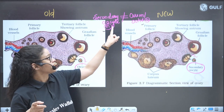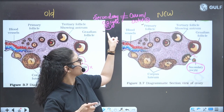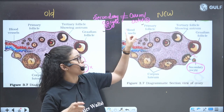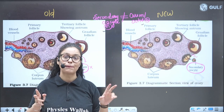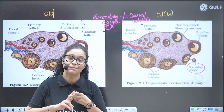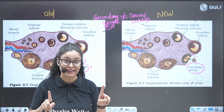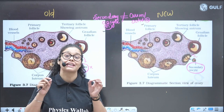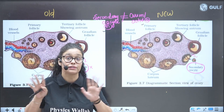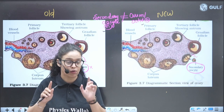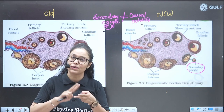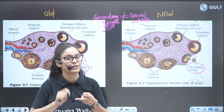Secondary oocyte is haploid, and ovum is also haploid, but they are not similar at all — they are not equivalent. As per NCRT they are equivalent, but no, they are not equivalent at all. We saw the difference in the notes.